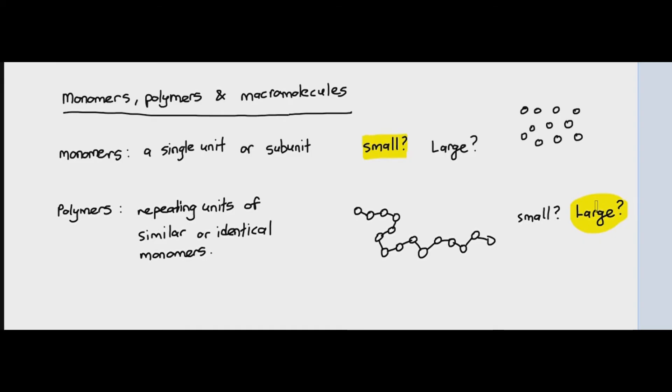So glucose is small. Starch is large. And don't worry about trying to memorize that. We will be seeing this in the next video, when we are talking about carbohydrates, proteins, nucleotides, and even lipids. Then comes the more important term, macromolecules.